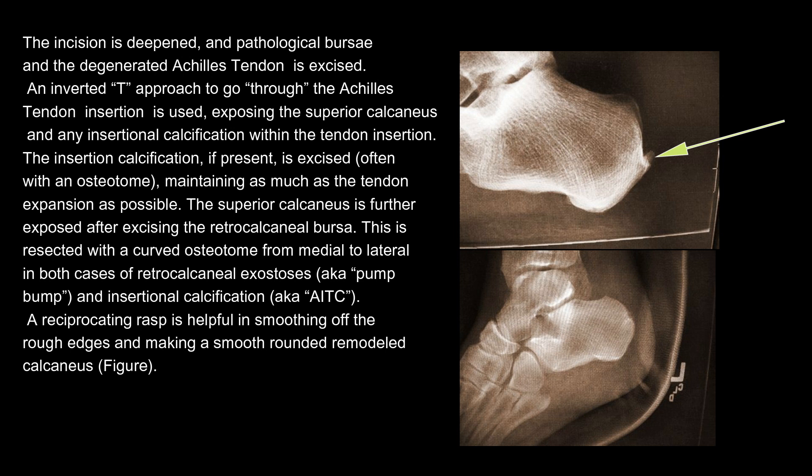The incision is deepened, and pathological bursae and the degenerated Achilles tendon are excised. An inverted-T approach through the Achilles tendon insertion is used, exposing the superior calcaneus and any insertional calcification within the tendon insertion. The insertional calcification, if present, is excised — often with an osteotome — maintaining as much of the tendon expansion as possible.